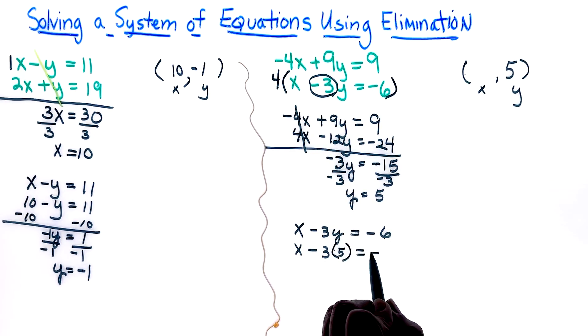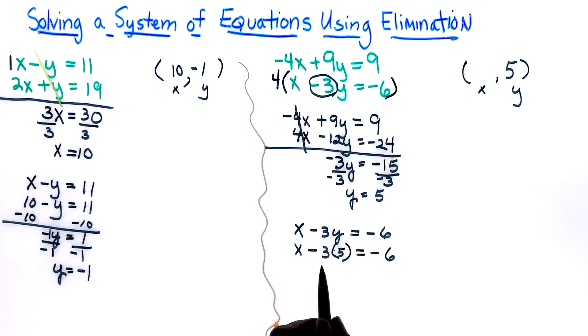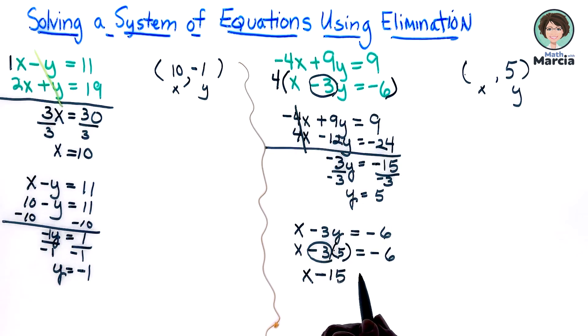Is equal to negative 6. We know we have to multiply, and when we multiply be sure to catch that subtraction sign. So x, I'm copying down, and now I'm going to multiply this. It's negative 3 times 5 is negative 15, and I'm writing minus 15 is equal to negative 6.